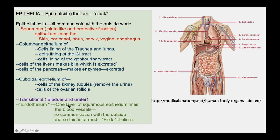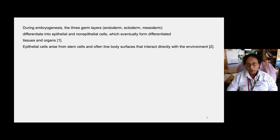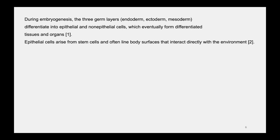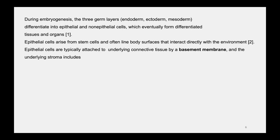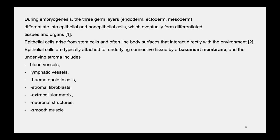Endothelium is one layer of squamous epithelium that lines blood vessels but has no communication with the outside, so it's called endothelium. During embryogenesis, the three germ layers — endoderm, ectoderm, mesoderm — differentiate into epithelial and non-epithelial cells, forming differentiated tissues and organs. Epithelial cells arise from stem cells and are attached to underlying connective tissue by a basement membrane; the underlying stroma includes blood vessels, lymphatic vessels, hematopoietic cells, stromal fibroblasts, extracellular matrix, neuronal structures, smooth muscle, and adipose tissue.